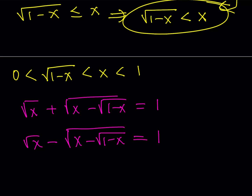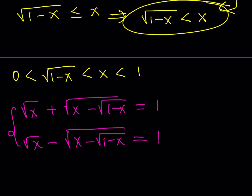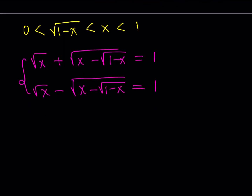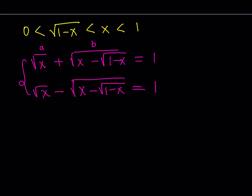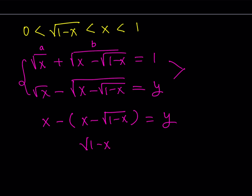I'd like to multiply these two conjugates together. Calling them a and b, multiplying (a + b)(a − b) from difference of two squares gives a² − b². That gives us x minus (x minus square root of (1 minus x)), and their product is 1 times y, which equals y. When you subtract and simplify the x's, you get the nice result: square root of (1 minus x) equals y.